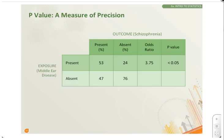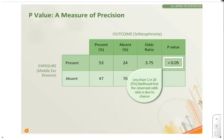How can we be sure if it is statistically significant or not? That's when the p-value comes in. It tells us that there is a less than 1 in 20, or 5%, probability that this observed odds ratio was due to chance. A p-value of less than 0.05 means that the result is statistically significant.